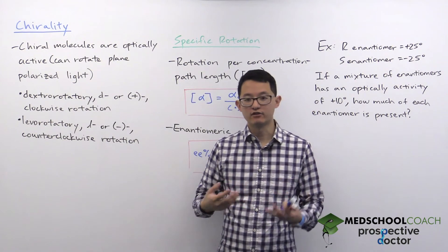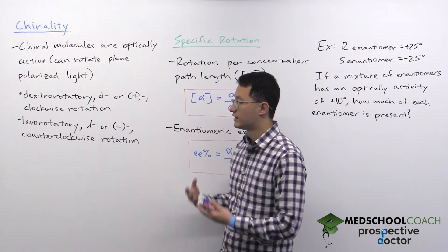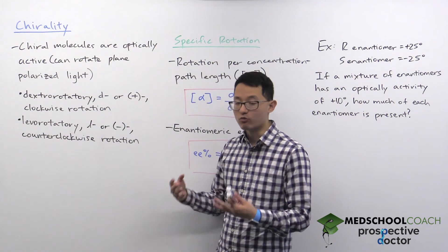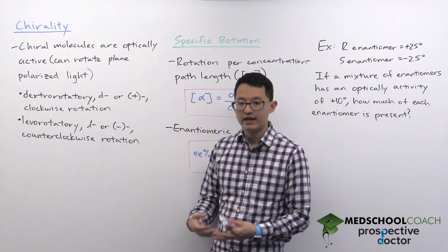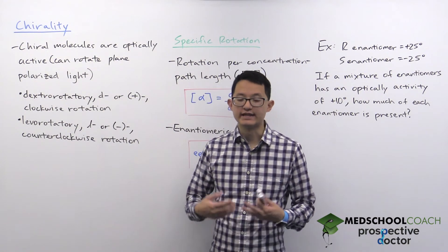When you're looking at chiral molecules, they're able to rotate plane polarized light in one of two directions: clockwise or counterclockwise. The way this is determined is experimentally.